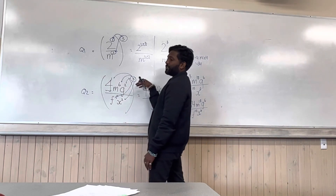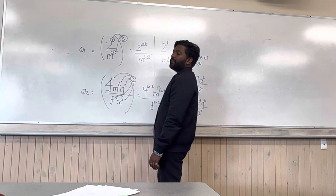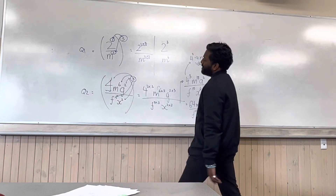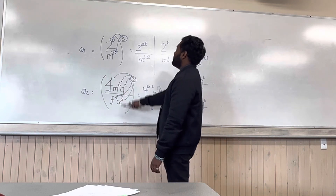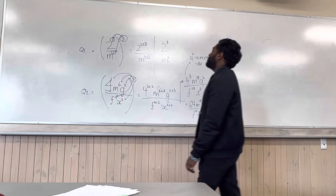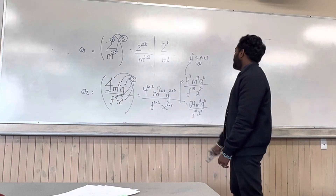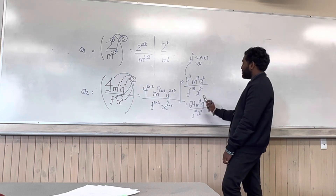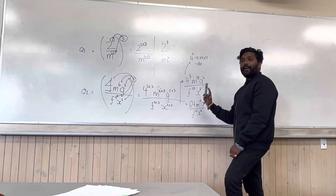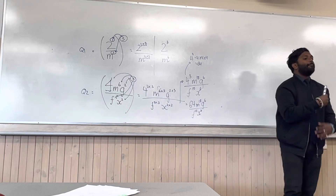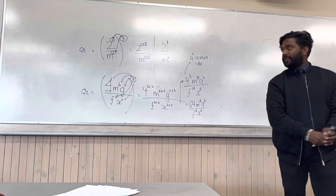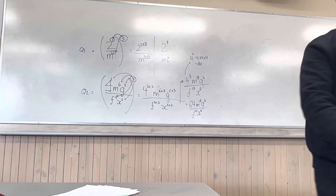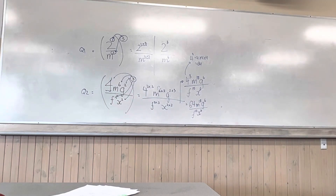That's how you do a question where you have division and a power affecting everything inside the brackets. As you can see, it involves division, but there's nothing to subtract because there are no common bases at the top and no common bases at the bottom.